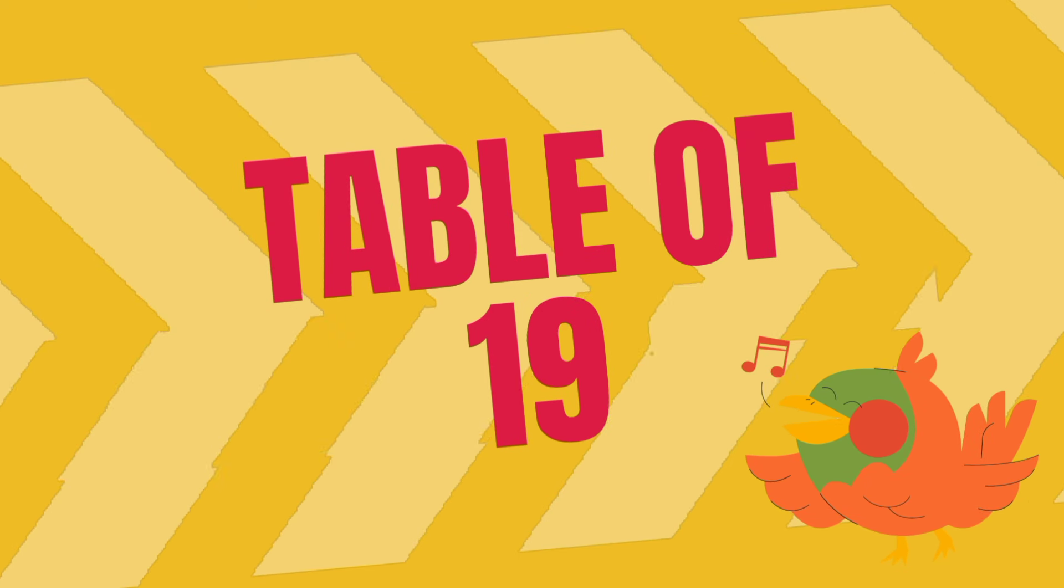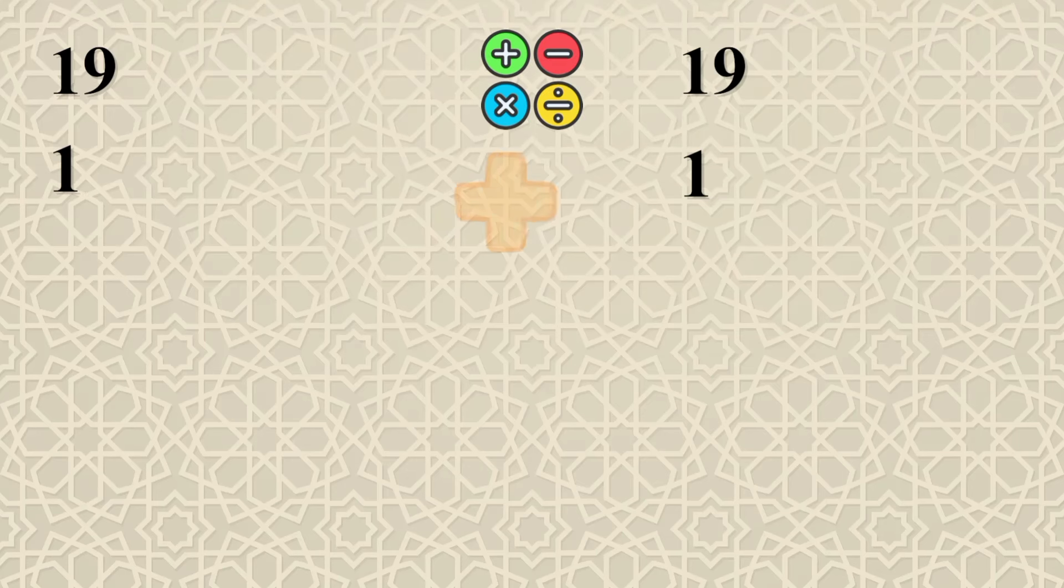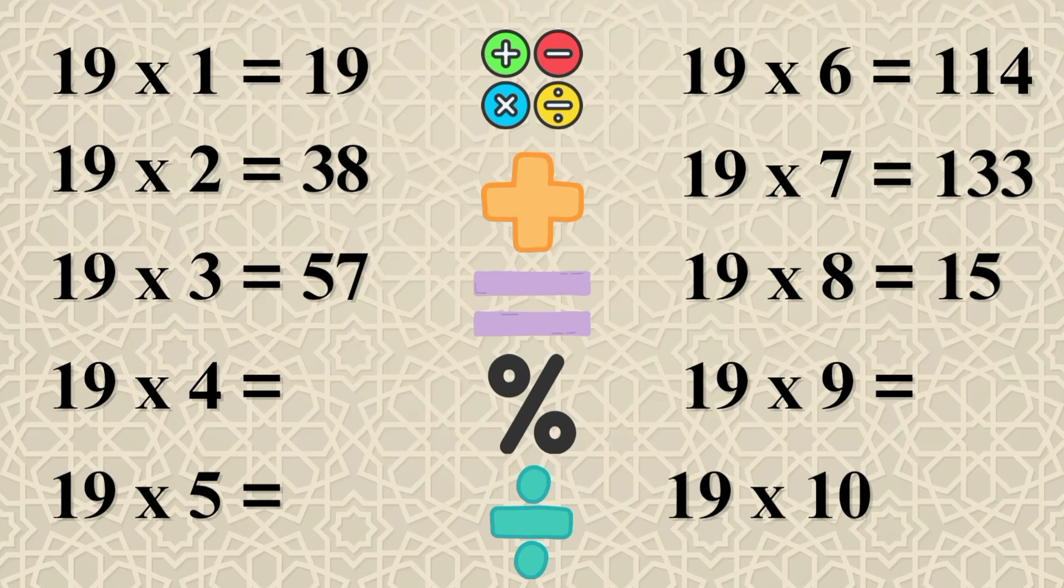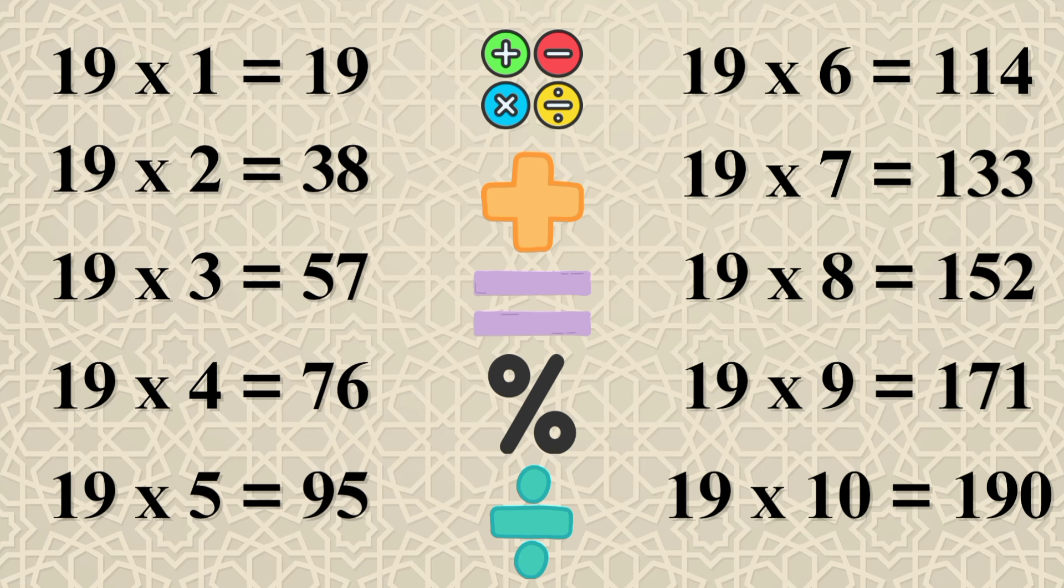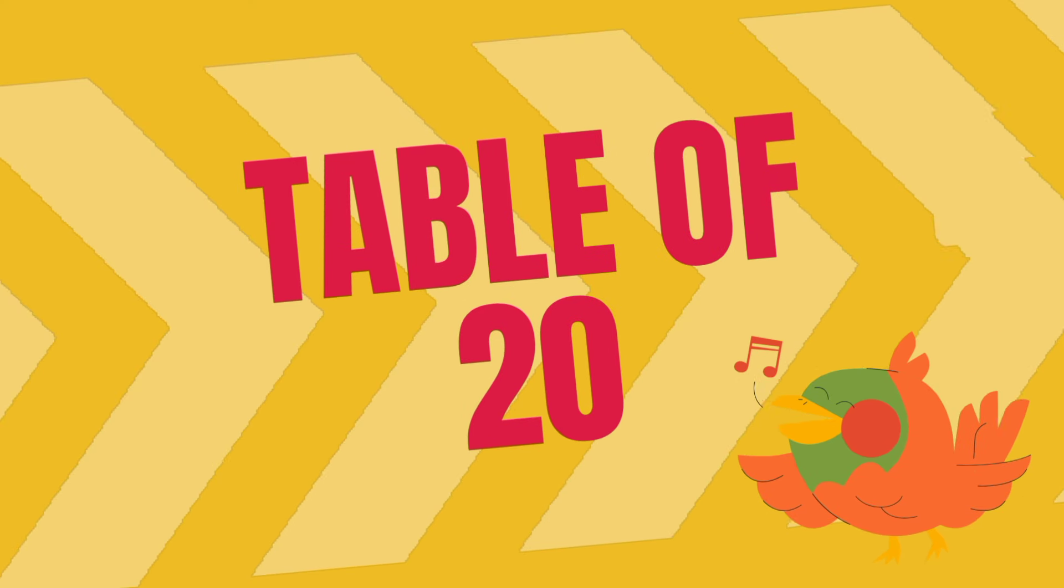Table of 19: 19×1=19, 19×2=38, 19×3=57, 19×4=76, 19×5=95, 19×6=114, 19×7=133, 19×8=152, 19×9=171, 19×10=190. Table of 20.